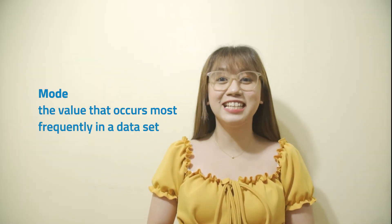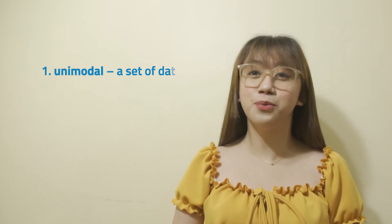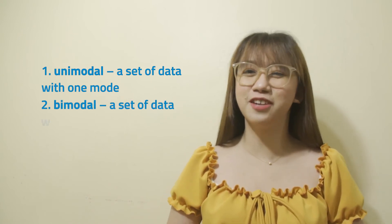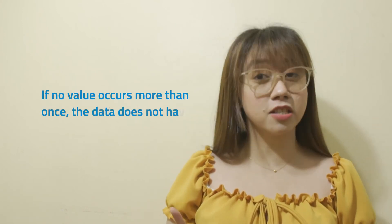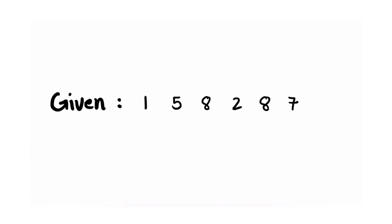Let's learn about the mode. The mode is the value that occurs most frequently in a data set. We can classify a set of data according to the number of modes: unimodal — one mode; bimodal — two modes; multimodal — more than one mode. If no value occurs more than once, the data does not have a mode. For example, in the data 1, 5, 8, 2, 8, 7, the number 8 appears more than once, so 8 is the mode. This data set is unimodal.